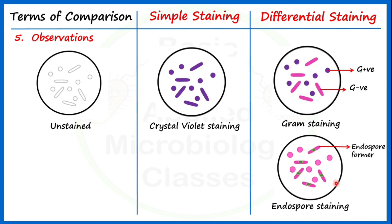Both gram staining and endospore staining are very important for routine microbiology laboratory work. The significance of these staining methods includes: firstly, identifying unknown cultures; secondly, checking the purity of previously stored cultures to see whether they are still retaining their characteristics after long-term storage; and thirdly, diagnosing the causal agent associated with a particular disease by examining bacterial cultures from a patient sample.